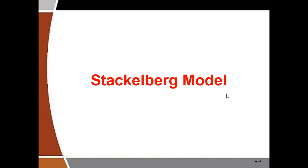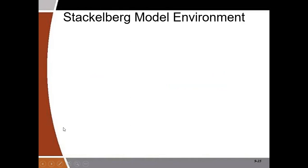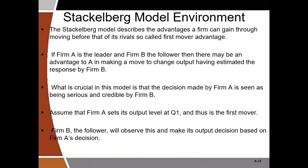What we are going to discuss in this video is the Stackelberg model. In the first video, I explained that there is the Sweezy model, the Cournot model, the Stackelberg model, and the Bertrand model, each with their own particular characteristics. When it comes to the Stackelberg model of oligopoly, assuming a duopoly form — two firms in the market — usually one firm is the leader and one firm is the follower.